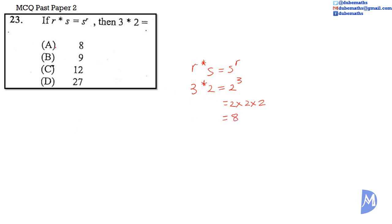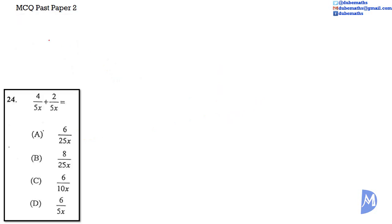The answer is A. Question 24: 4 over 5x plus 2 over 5x is equal to: is it A, 6 over 25x; is it B, 8 over 25x; is it C, 6 over 10x; or is it D, 6 over 5x?